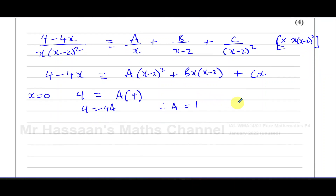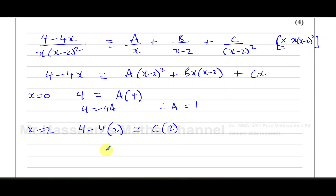Now we find C by substituting x equals 2 into the whole identity. That causes the A and B terms to become 0, leaving just the C term. So 4 minus 4 times 2 equals C times 2. That gives minus 4 equals 2C, so C equals negative 2. So the C term is negative 2 over (x minus 2) squared.